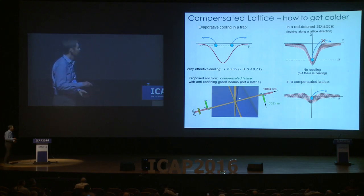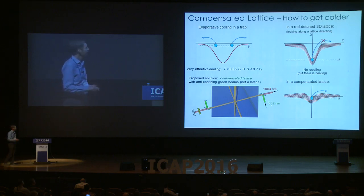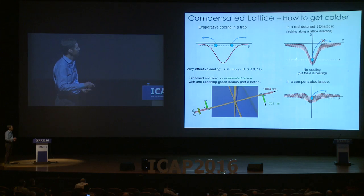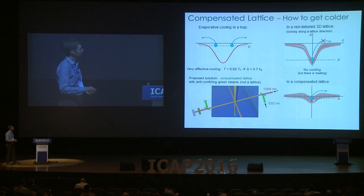We realized one can compensate this trapping potential with an anti-confining potential, provided by a blue-detuned laser beam at 532 nanometers that is not retroreflected. While the lattice beams are retroreflected to form standing waves, these blue-detuned beams are not. If the beam waists are the same size, the beam provides a smooth potential that can completely cancel the confining envelope of the lattice beam. You now have a knob — by controlling the intensity of this green beam you can adjust the chemical potential to near or around the evaporation threshold.